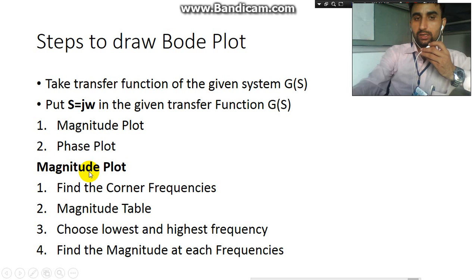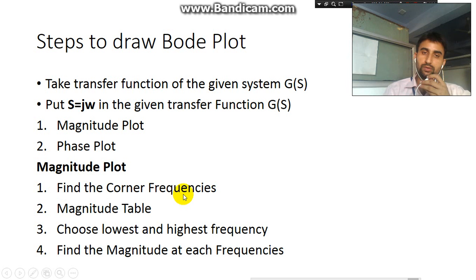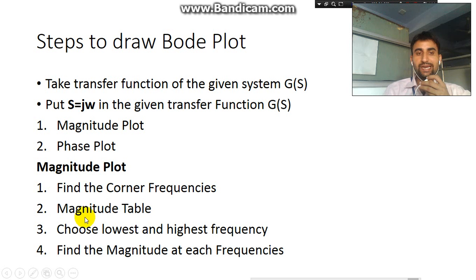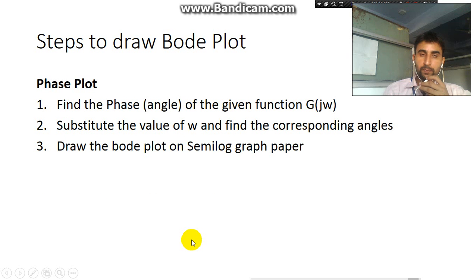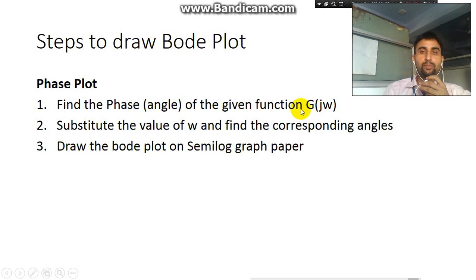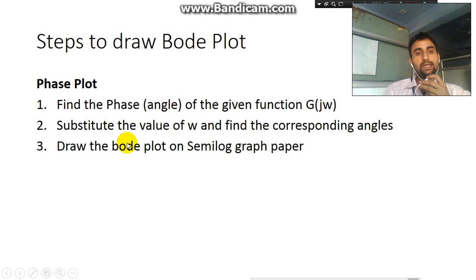Under the magnitude plot, the first step is to find the corner frequency — we'll discuss what corner frequency is later. Then we'll draw a magnitude table, which will decide the slope and related things for that plot. Then we'll choose the lowest and highest frequency apart from the corner frequencies, find the magnitude at each corner frequency, and then go for the next step. Under the phase plot, we'll find the angle of the given transfer function G(jω), put in values of ω, find the corresponding angles, and then draw the Bode plot on a semi-log graph paper.